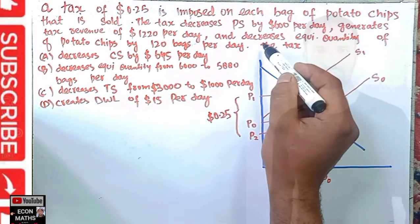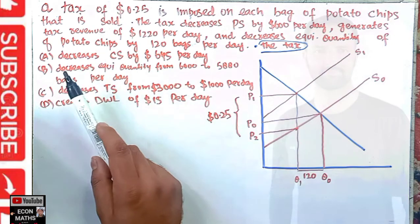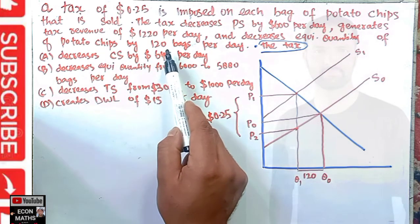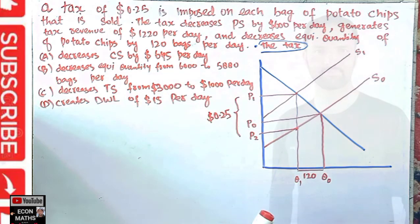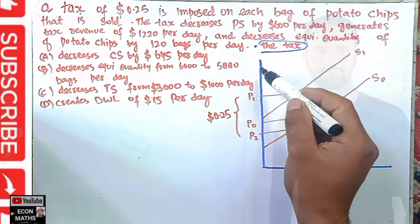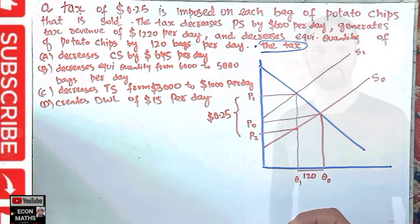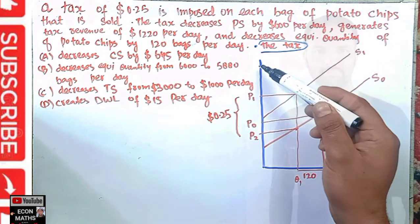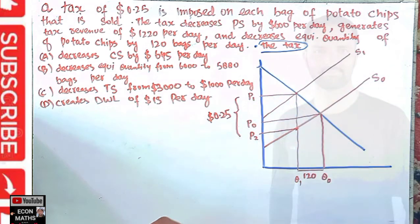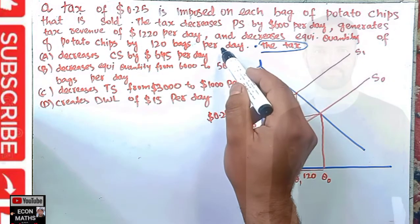Now let's evaluate option A: decreases consumer surplus by $645 per day. We cannot calculate consumer surplus here because we are not given the intercept of the demand curve. Consumer surplus is the area above the equilibrium price and below the demand curve — without that intercept value, we cannot calculate it. So option A cannot be the correct answer.